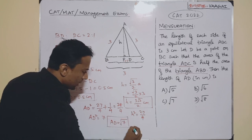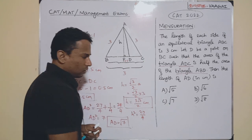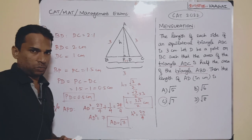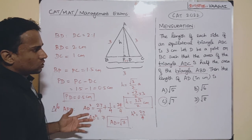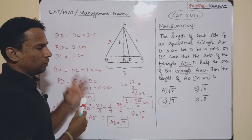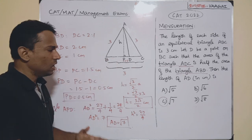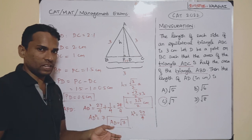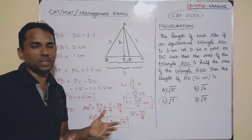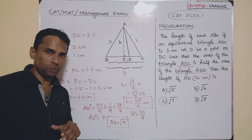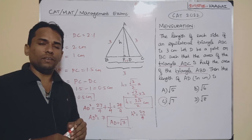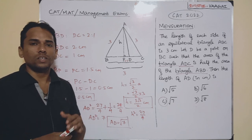Finally, we got AD equal to square root of 7, which is option C. Although the question is simple, we need to do some setup and construction in the given picture, which helps us solve the problem very easily. Once that construction is done, the solving becomes straightforward. I hope the steps are clear. If any doubts, put them in the comment box. See you in the next session with another interesting question. Thank you so much.